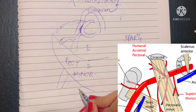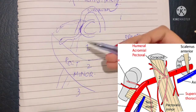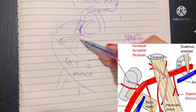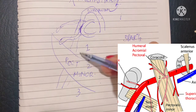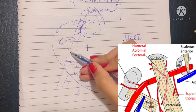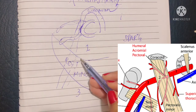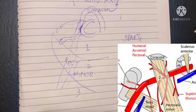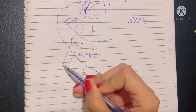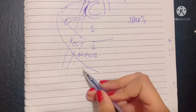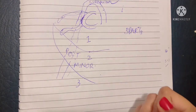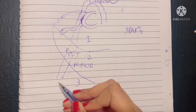The first part lies superiorly, or proximal to the pectoralis minor muscle. The second part lies deep, or just posterior to the pectoralis minor muscle. The third part lies inferiorly, or distal to the pectoralis minor muscle. This is of anatomical importance, as each part gives off a different branch.